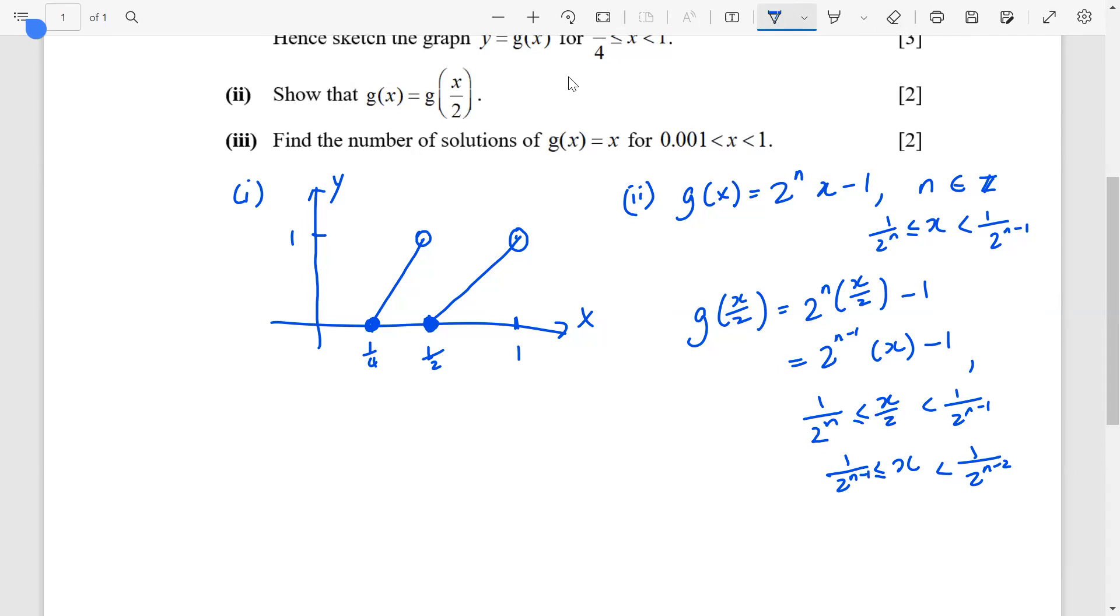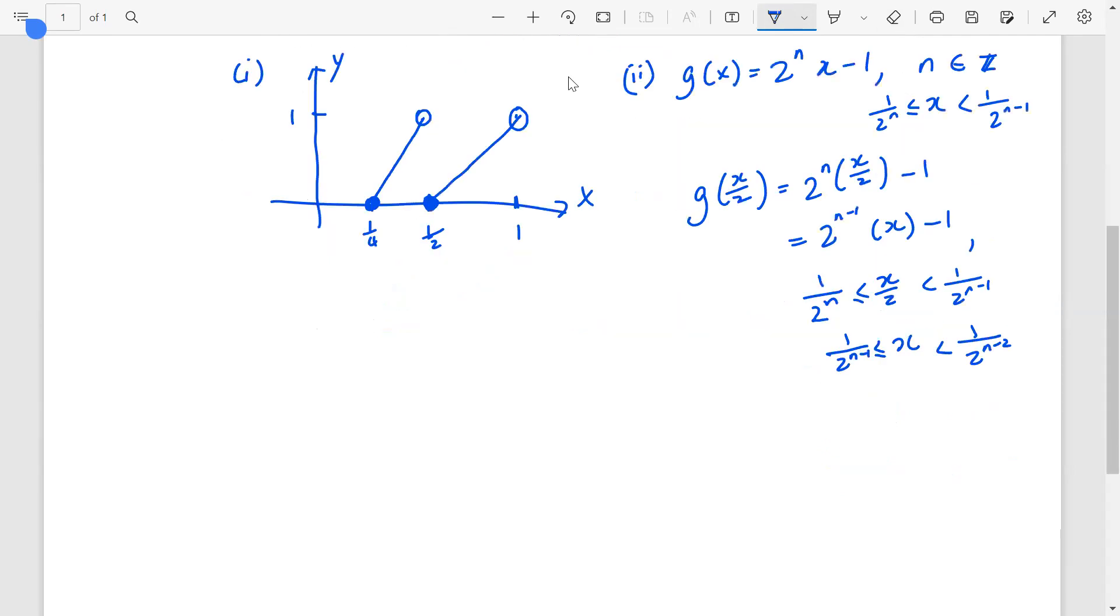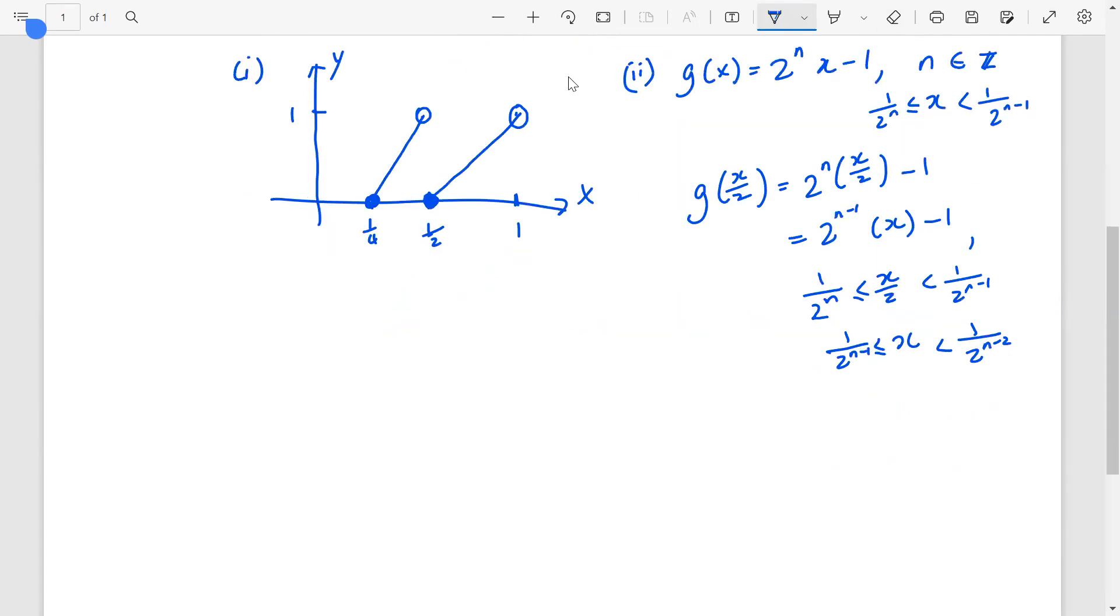So, if you use words, it will be something like for n spanning all integers, the graph will be the same. The range of value, the n spanning all integers, we'll see that g(x) is equals to g(x/2). But it's still hard to explain sometimes. So, what was done was that they let k equals to n minus 1.